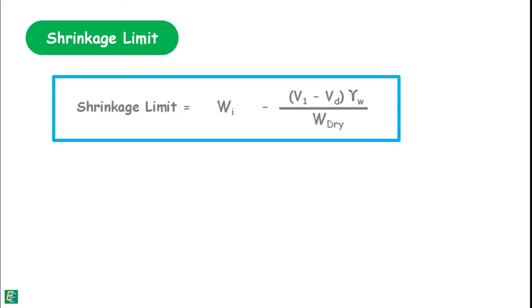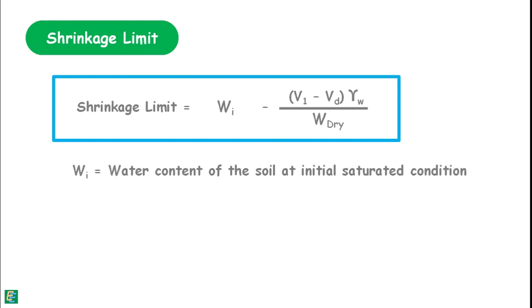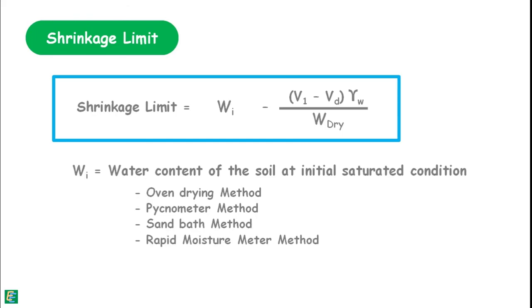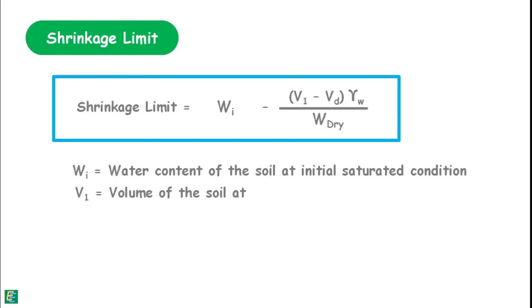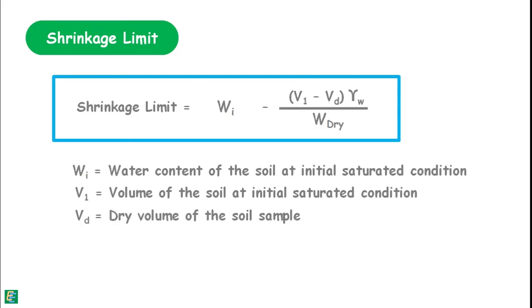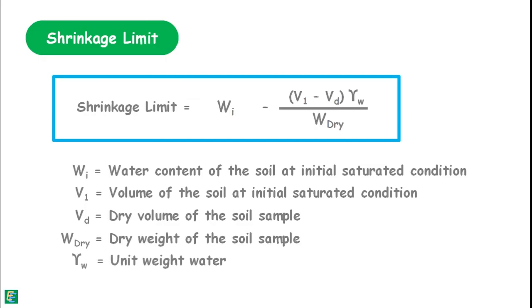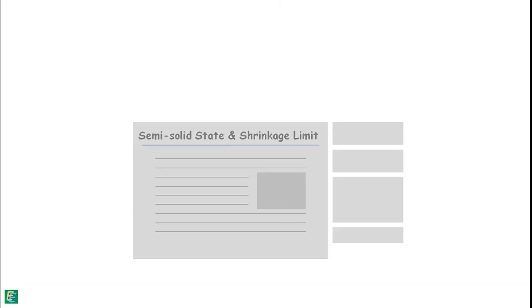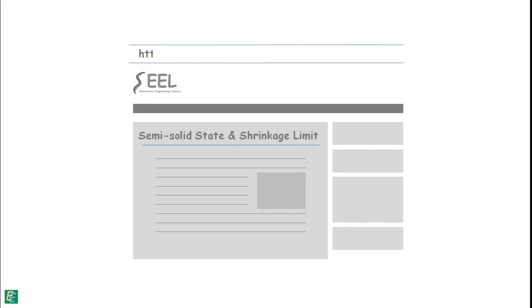In this equation, all quantities are known. Wi is the water content of the soil at the initial saturated condition, determined by any water content determination method. V1 is the volume of the soil at the initial saturated condition. Vd is the dry volume of the soil sample. W dry is the dry weight of the soil sample, and gamma w is the unit weight of water. For further reading on semi-solid state and shrinkage limit determination, visit elementaryengineeringlibrary.com — the link is in the description.